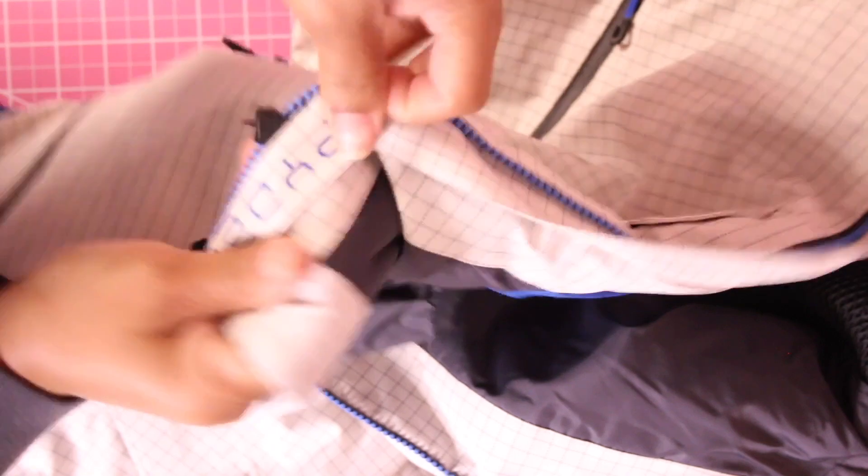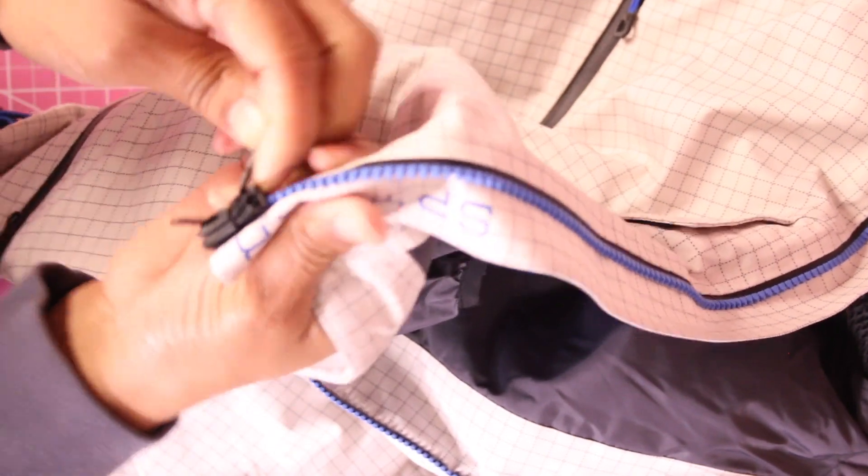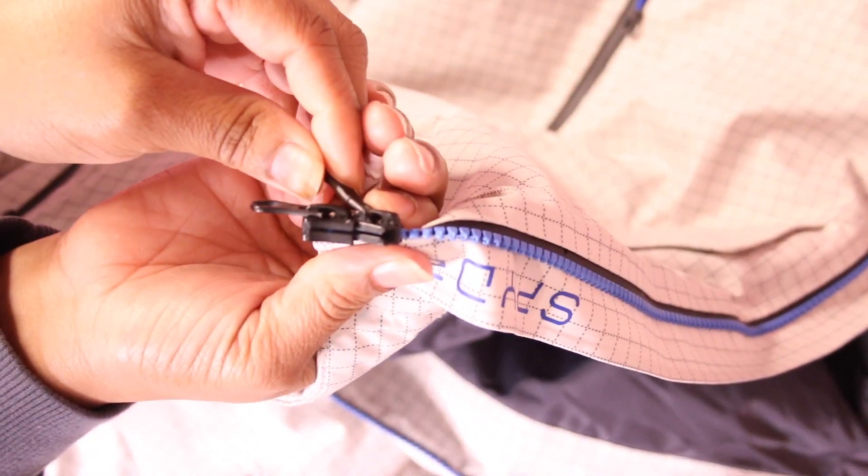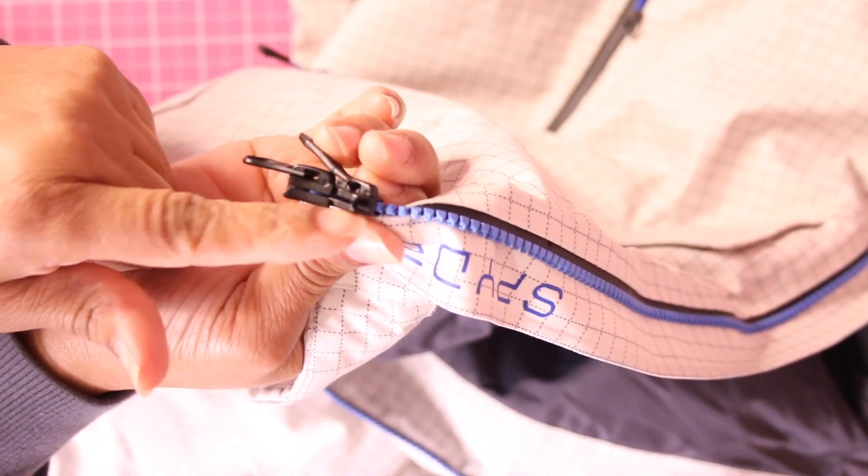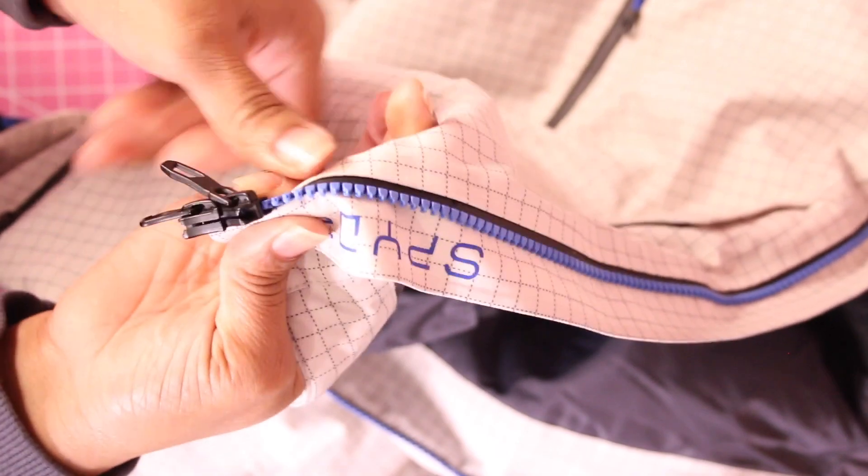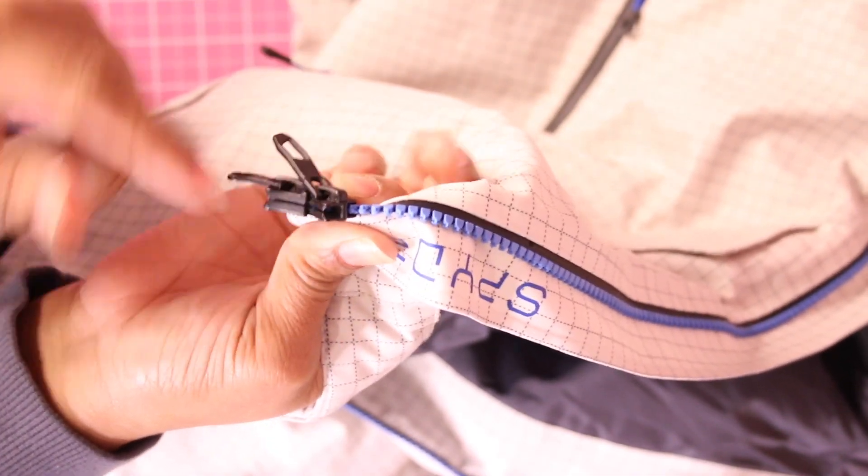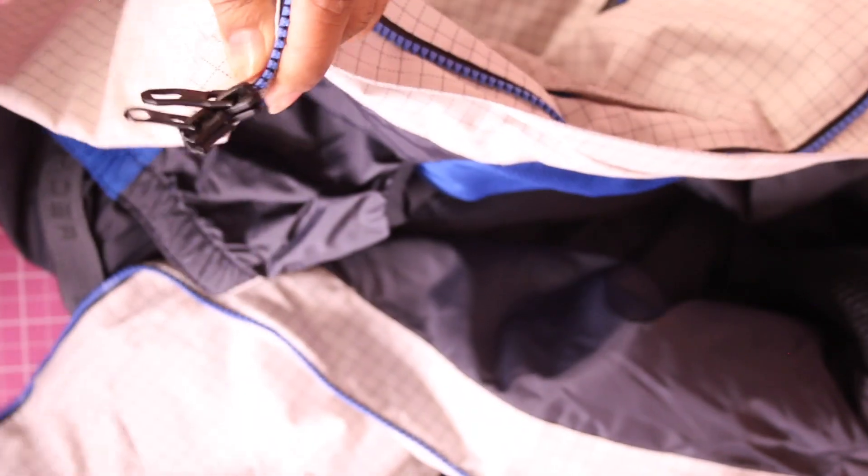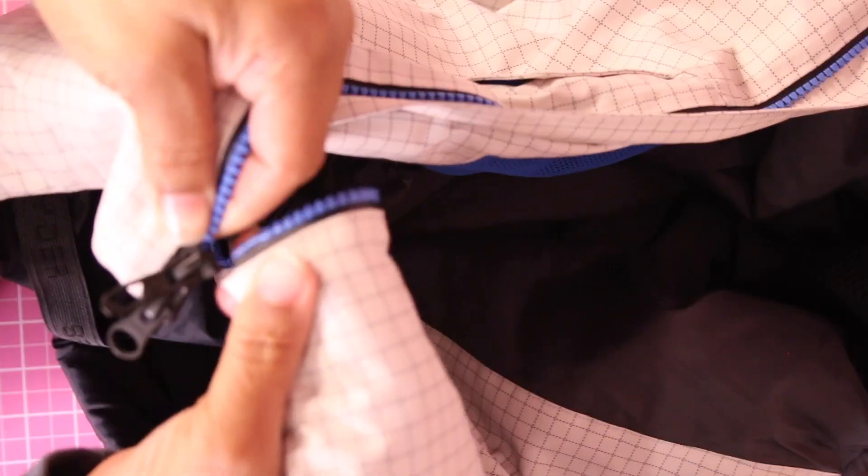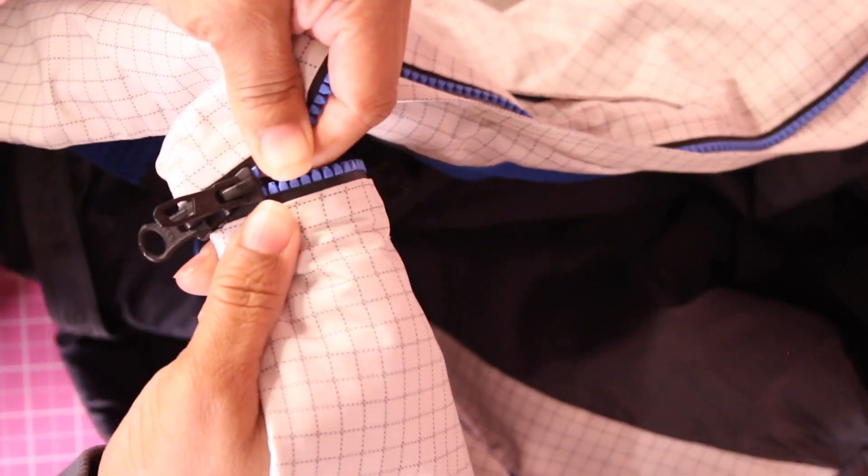What you need to do is make sure that both of your sliders are in position like this and line up. They have to be lined up in order to be able to zip this. If they're not lined up, they will not zip.